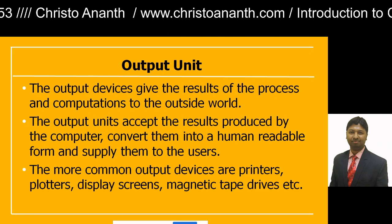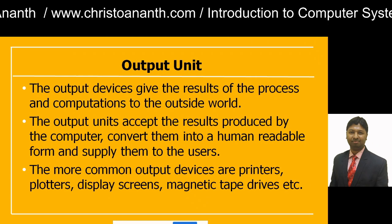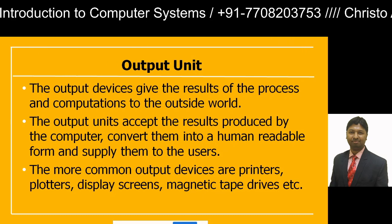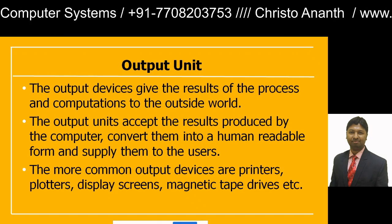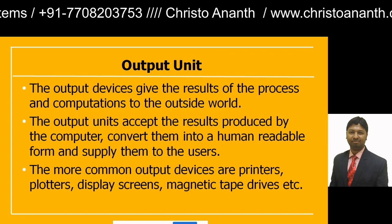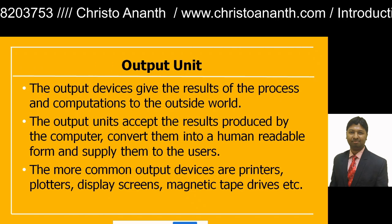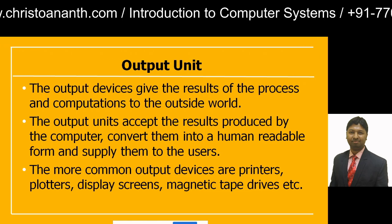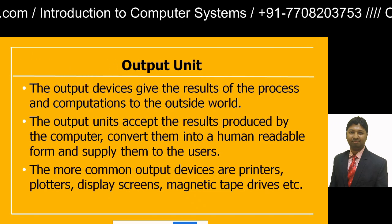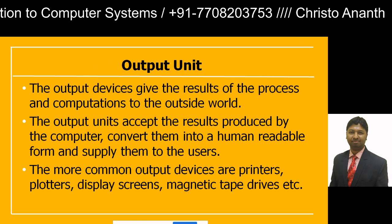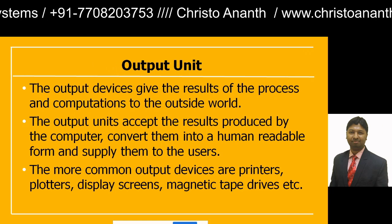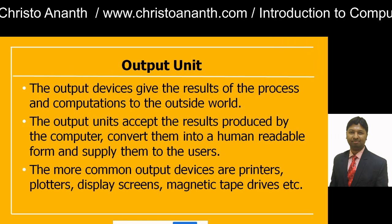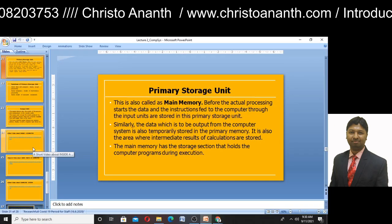Finally, the output unit produces results of computations for the outside world. Since results are in binary or computer-understandable form, they must be converted into human-readable form and supplied to users. Output devices include printers, display screens, magnetic disks, and magnetic tape drives. The output unit processes results in a human-readable form and supplies them to the users — that is the function of the output device and the complete computer system.